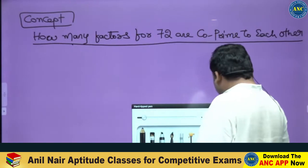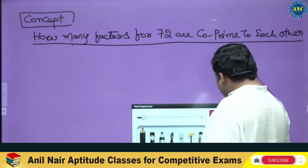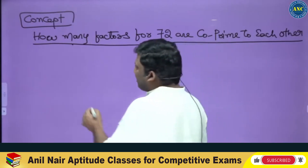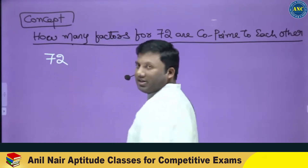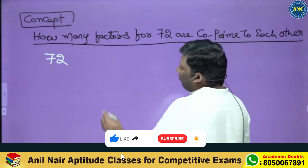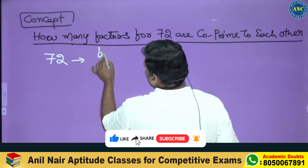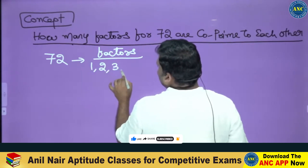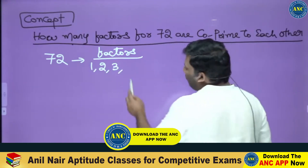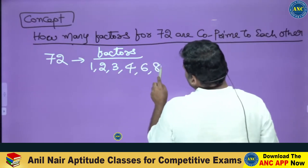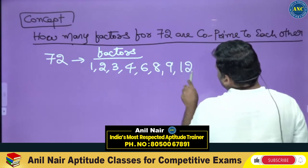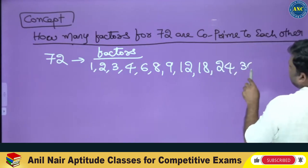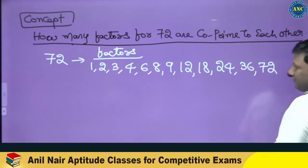Now see here, read very carefully. Very interesting question it is. How many factors for 72? First of all, let us list all the factors of 72. Now 72 — the factors are: 1, 2, 3, 4, 6, 8, 9, 12, 18, 24, 36, and 72.